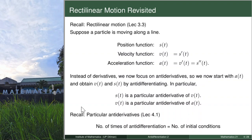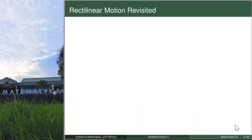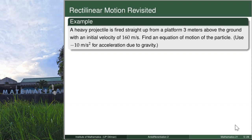Recall our lesson in particular antiderivatives in lecture 4.1. We know that the number of times that you antidifferentiate will also be the number of initial conditions that you have in your problem. So let's use this fact in our next examples. Here is our first example: a heavy projectile is fired straight up from a platform 3 meters above the ground with an initial velocity of 160 meters per second.